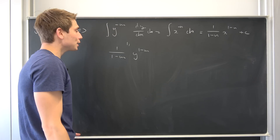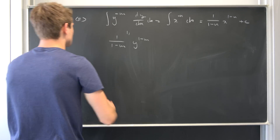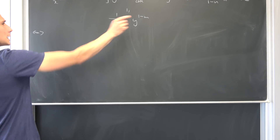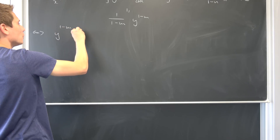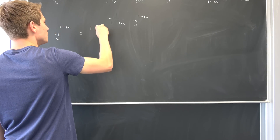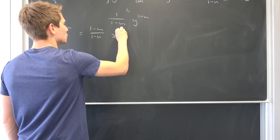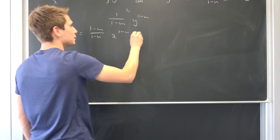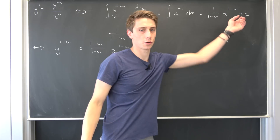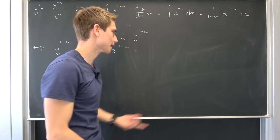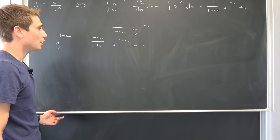Now we can multiply both sides by (1 minus n) — we don't want it to equal zero. So we end up with y to the (1 minus n)th power being equal to (1 minus m) over (1 minus n) times x to the (1 minus n)th power, plus a constant — let's call it K.